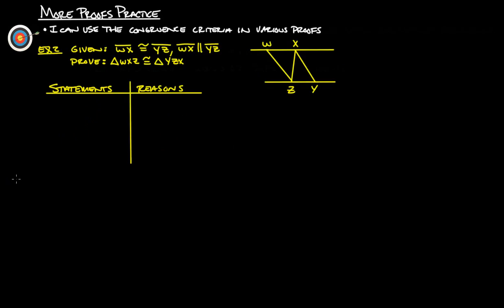Next, example two: given that WX is congruent to YZ, and WX is parallel to YZ. Let's mark the parallel lines. We're going to prove that triangle WXZ is congruent to triangle YZX. Let's get our givens out of the way first. Since these lines are parallel, we know by the alternate interior angles theorem that this angle is congruent to that angle.